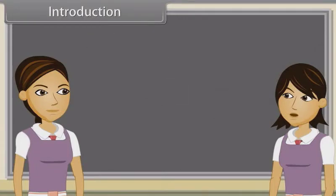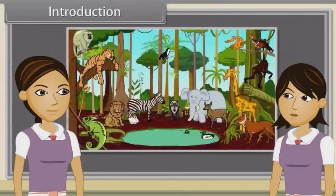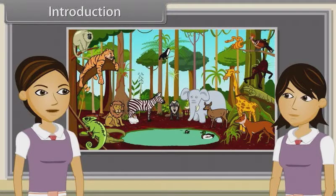Sharmila, in a few words define an animal. Yes, animals are a major group of mostly multicellular, eukaryotic organisms of Kingdom Animalia or Metazoa.